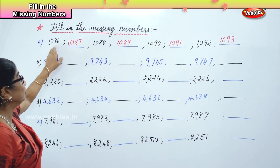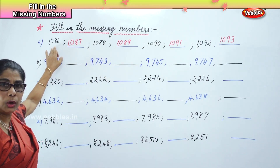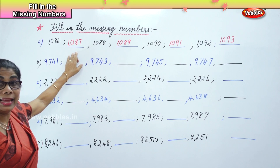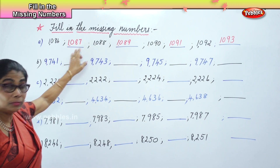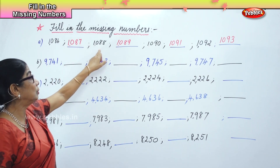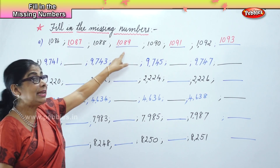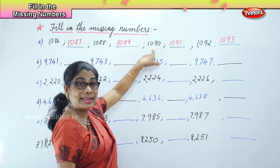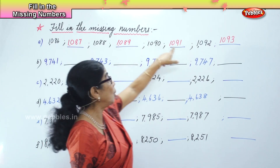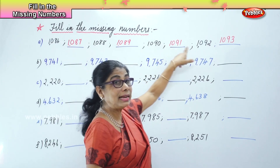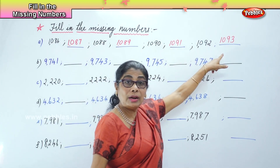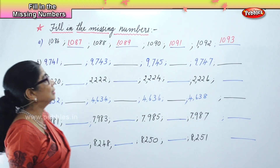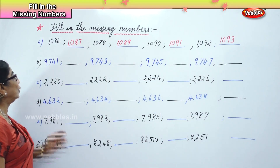Let's read along: 1086, 1087, 1088, 1089, 1090, 1091, 1092, 1093.